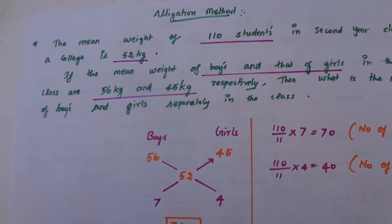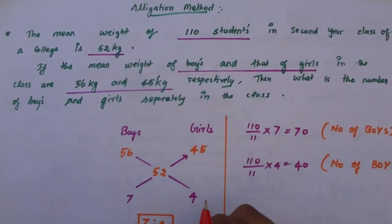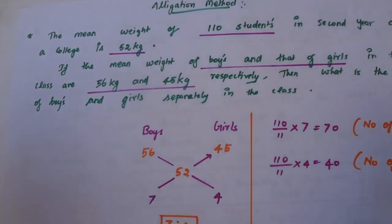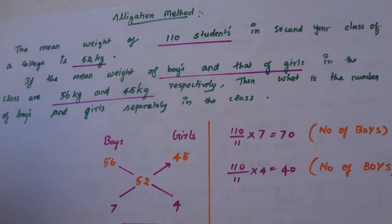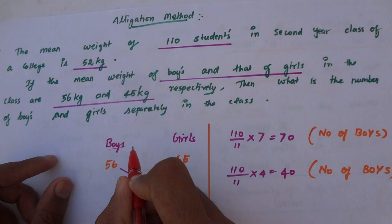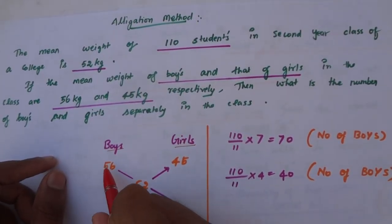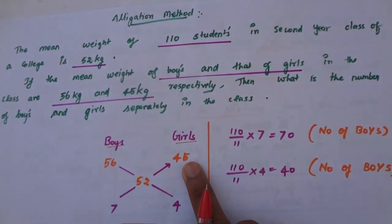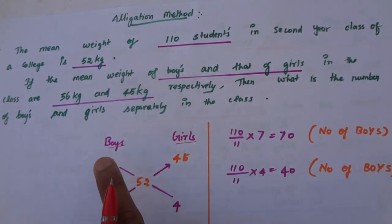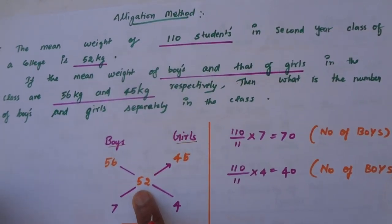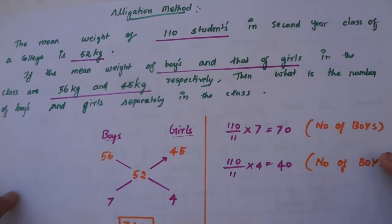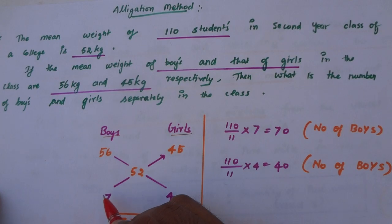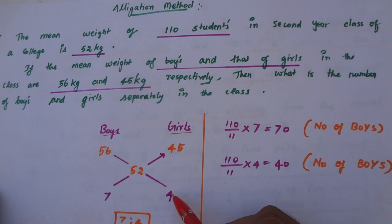Now the number of boys and girls is to be found separately. Boys are 56 kg and girls are 45 kg — these are the mean weights. Using alligation: 52 minus 45 is 7, and 56 minus 52 is 4. So the ratio of boys to girls is 7:4.